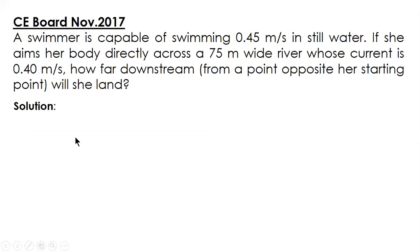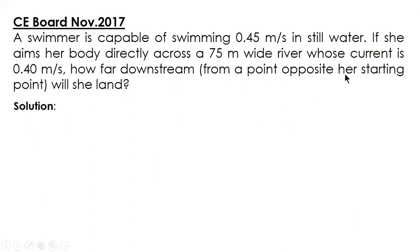The second problem: A swimmer capable of swimming 0.45 meters per second in still water points her body directly across a 75-meter wide river. How far downstream, referred from a point opposite her starting point, will she land?